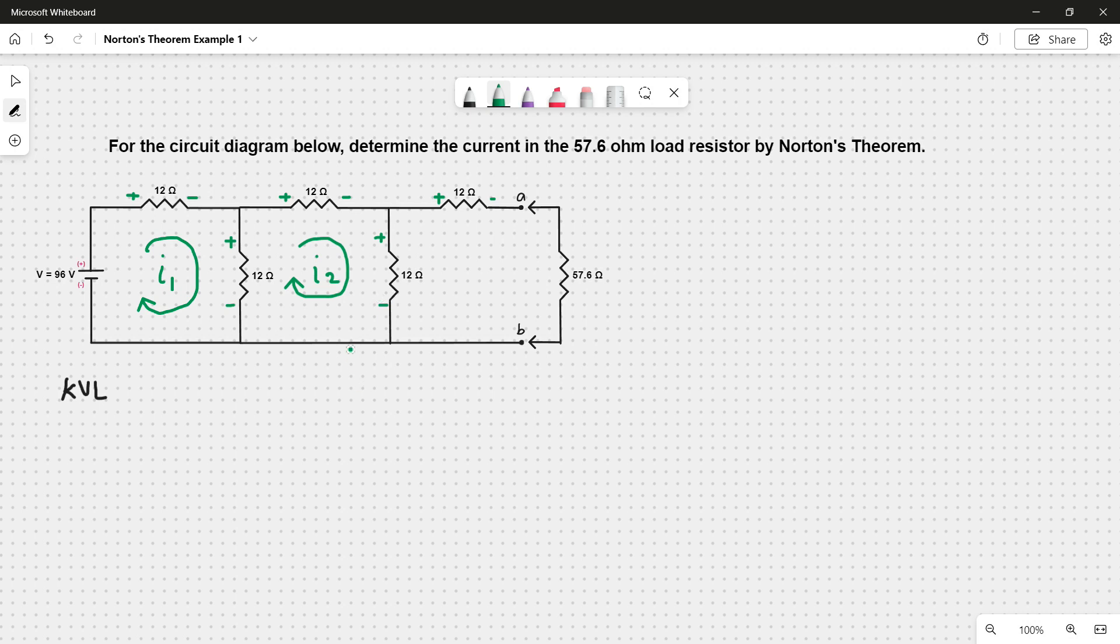So in I1, we are entering in the negative side of 96 volts, so that's negative. Next, positive I1 times 12, or 12I1 plus. Next, we have two currents here going opposite with each other, so that's I1 minus I2 multiplied by 12 ohms, all equal to zero.